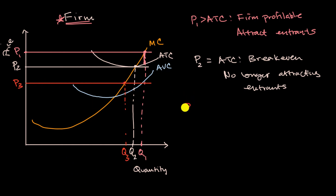There's some interesting things. Because P sub three is less than your average total cost, your firm is running at a loss. It's running at a loss here. So firm not profitable.